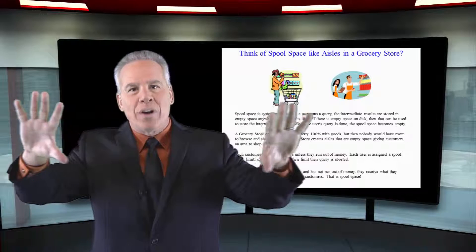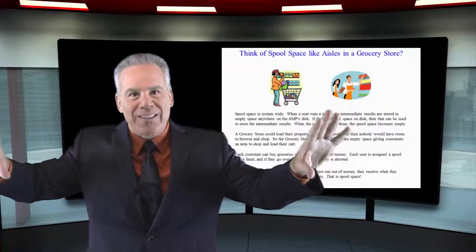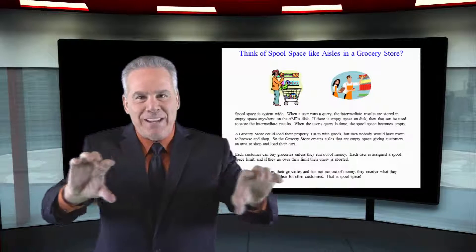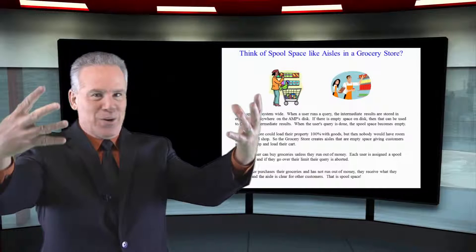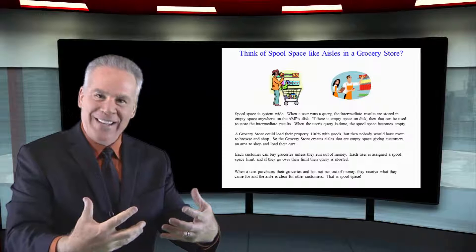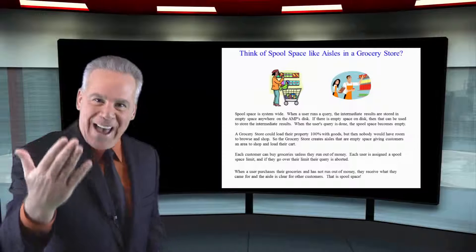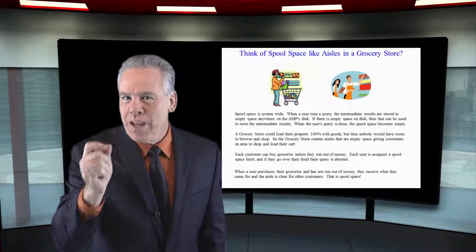You need spool space and perm space in a system. Perm space to hold the majority of the tables and some empty space like aisles where people can actually purchase and build things in their cart and buy. That's the way it works.